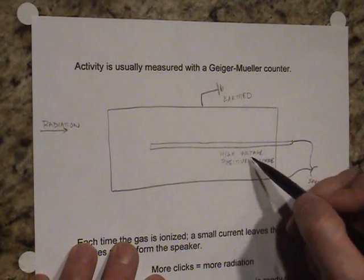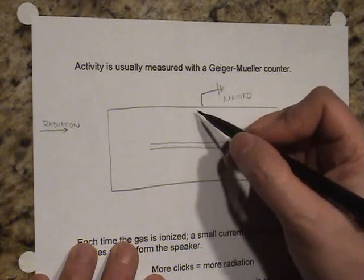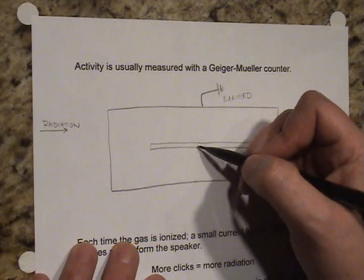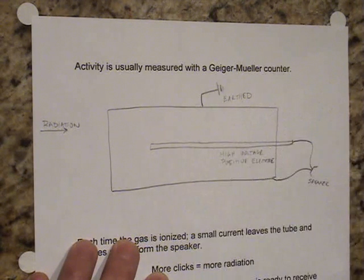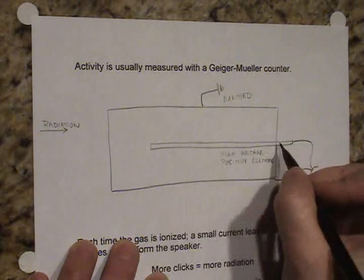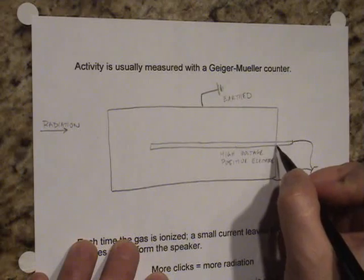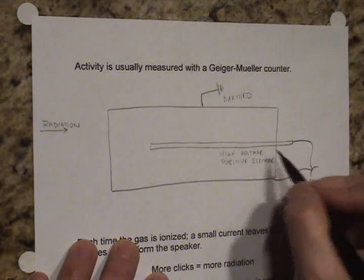Because this is a very high voltage positive electrode, there is an enormous potential difference between the tube on the outside and the wire on the inside. This typically is more than a thousand volts. Sometimes it could be as much as two or three or even four thousand volts potential difference between the wire and the center. And of course there is an insulator that makes sure that the wire does not touch the metal tube on the outside.